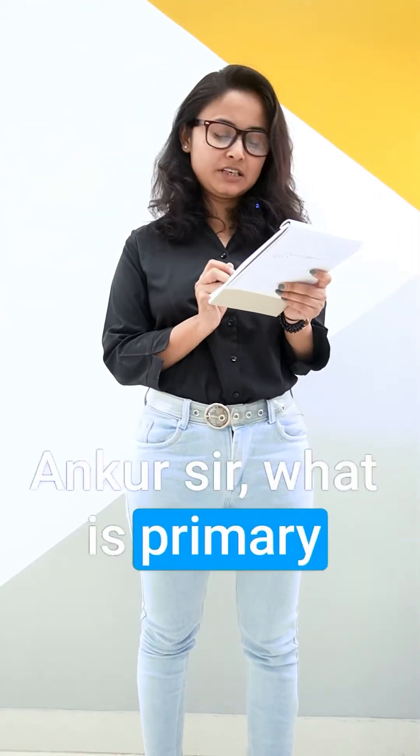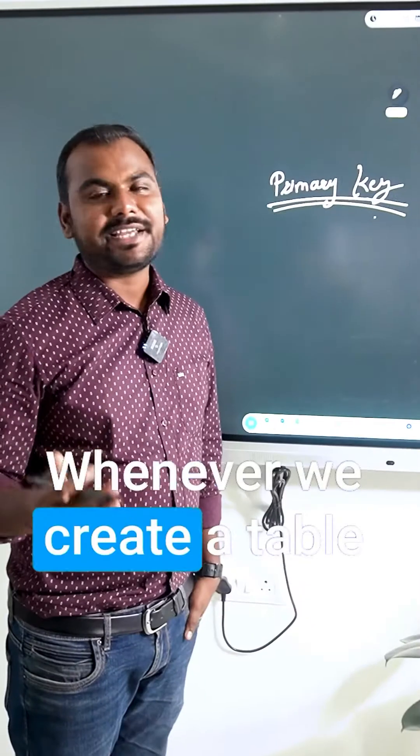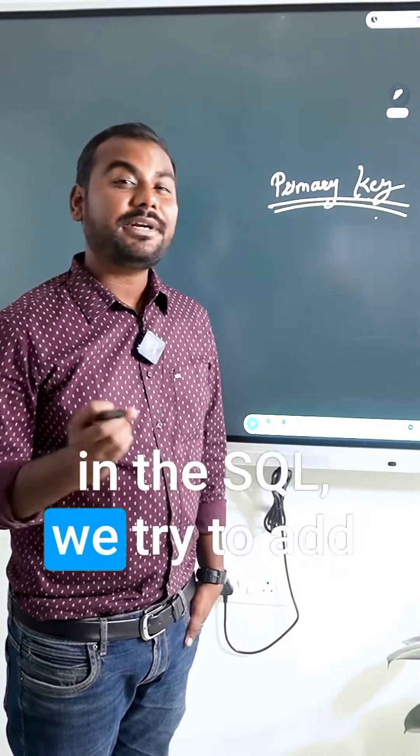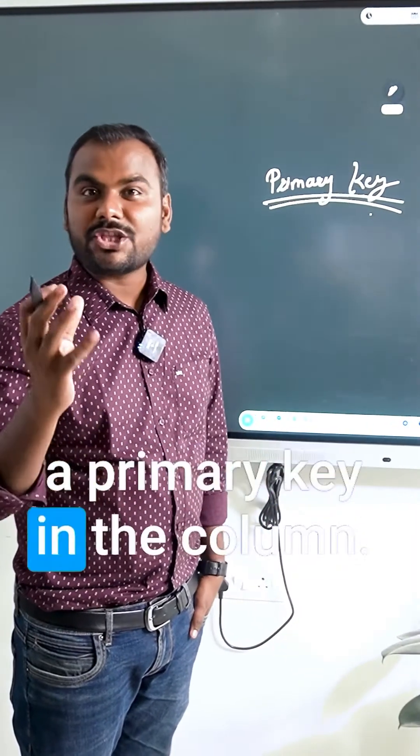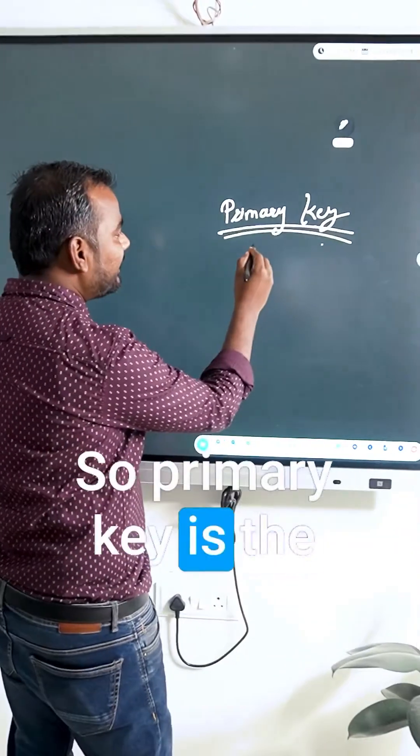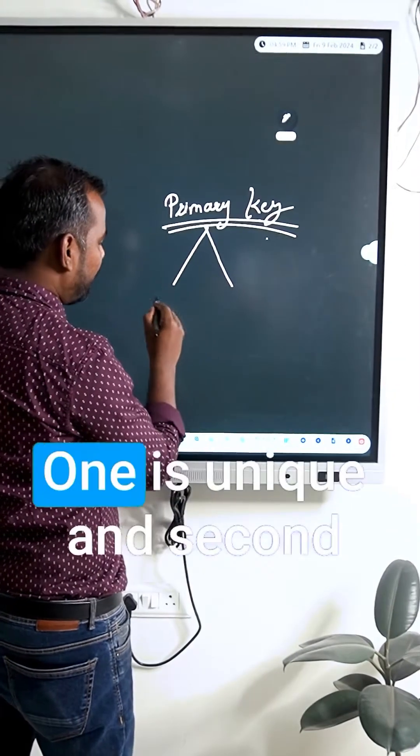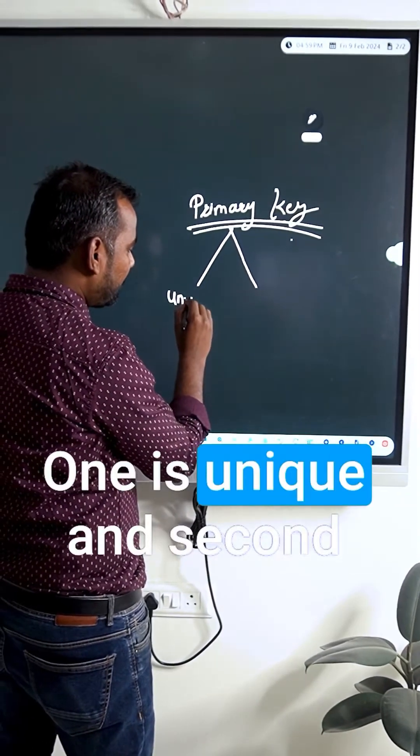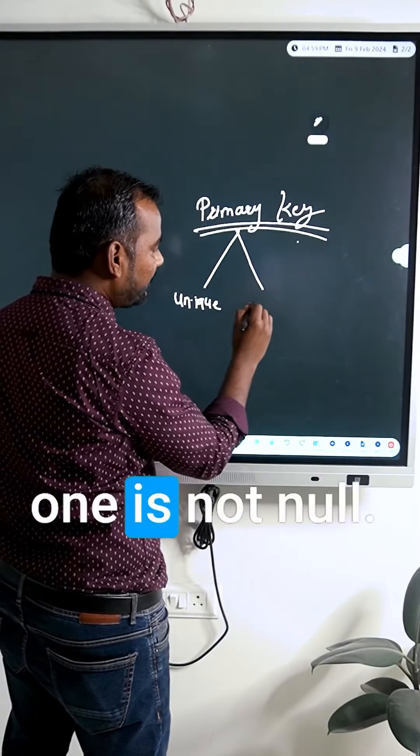What is primary key in SQL? Whenever we create a table in SQL, we try to add a primary key in the column. A primary key is the combination of two things: one is unique and second is not null.